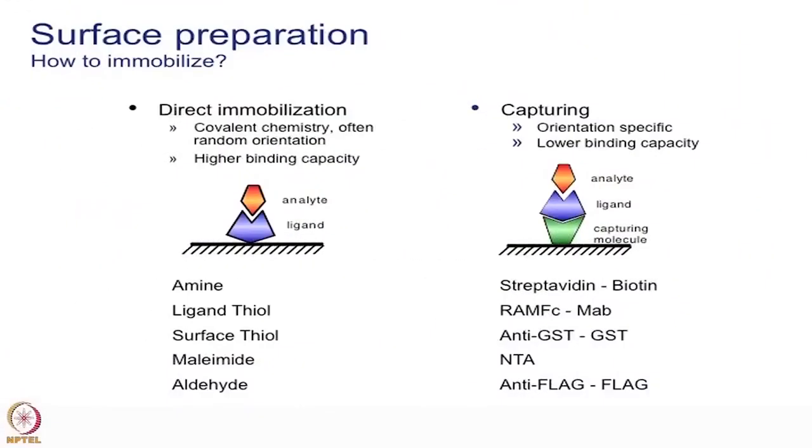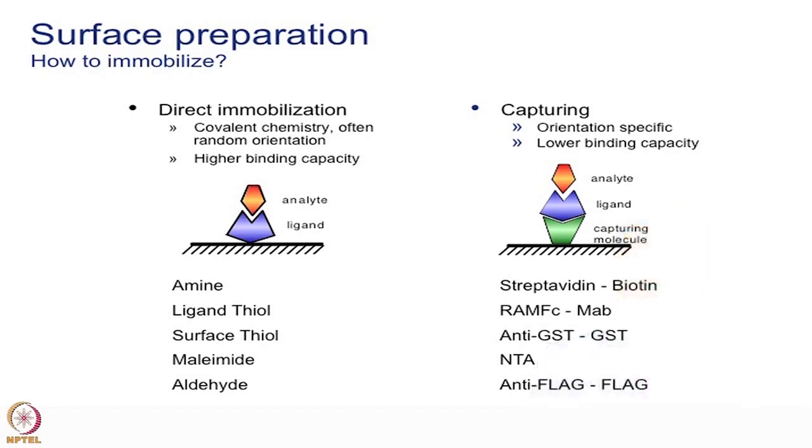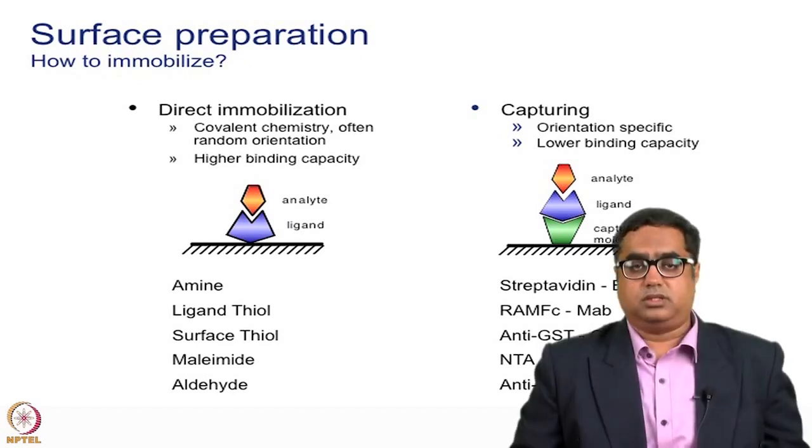In this session we will understand the different kinds of sensor surfaces and their use in immobilization of ligands. Direct immobilization is a covalent, permanent immobilization where the ligand is immobilized on the surface permanently. Another way is capture immobilization. We will go into each sensor surface in detail to understand what they are, their major utility, and how to design an assay based on these chips.